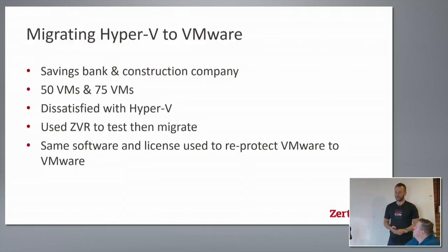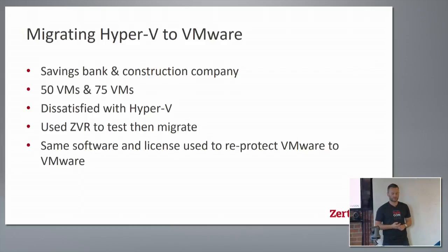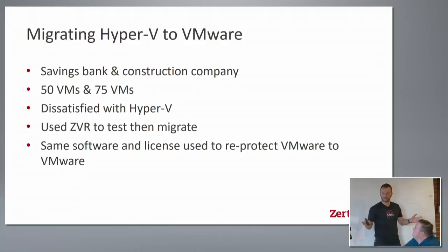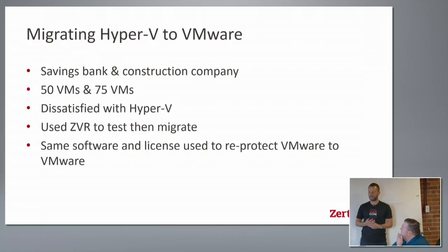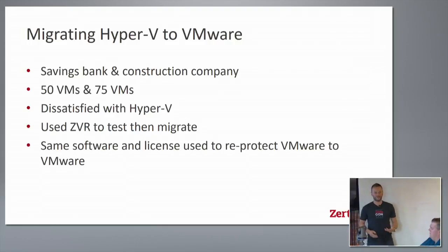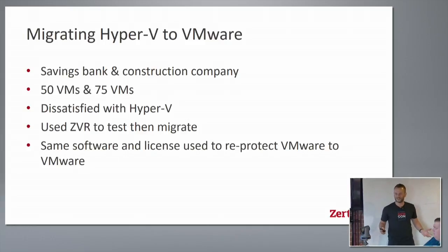In this example we had a savings bank and a construction company, not the biggest environment, 50 VMs and 75 VMs. They were dissatisfied with Hyper-V. They started with a small environment, and as they got bigger they had some challenges. They found out they were the first to have those challenges. Quite often in a Hyper-V environment when you Google 'has anyone seen this error' and you don't see anything, you think okay now I'm stuck.